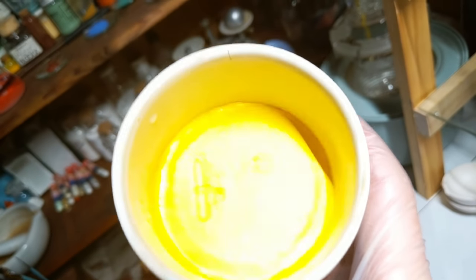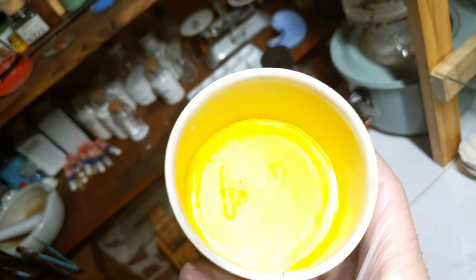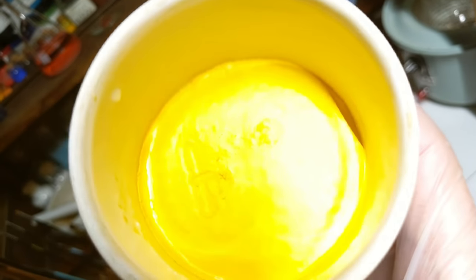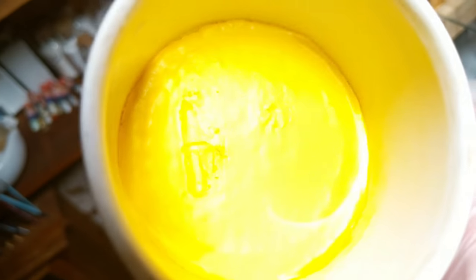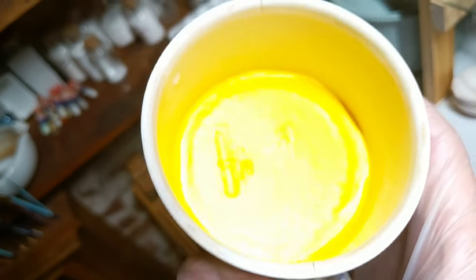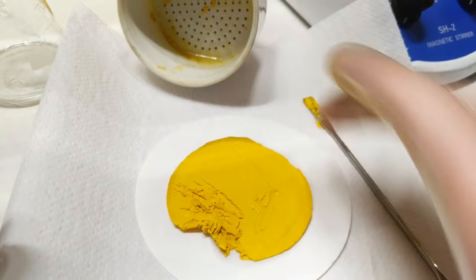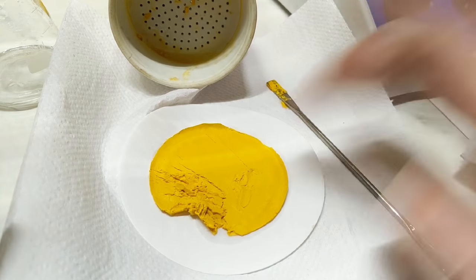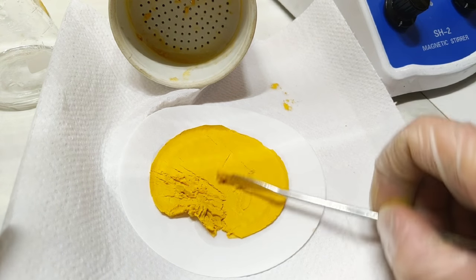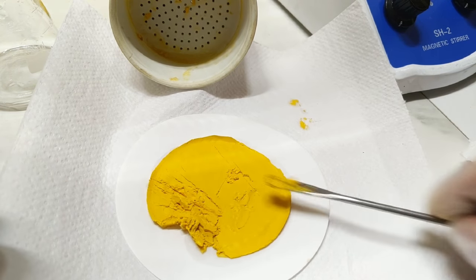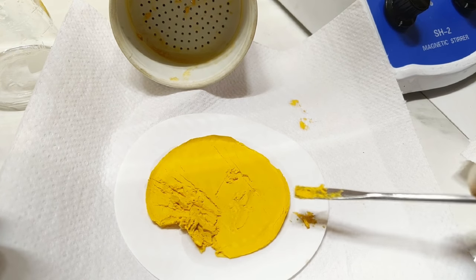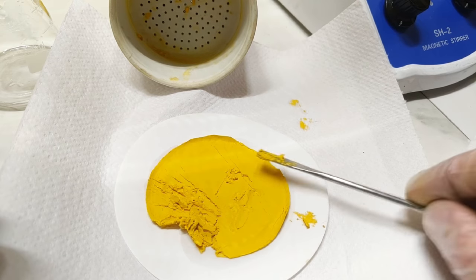Here we can see after running it through the vacuum filter, it seems to have dried up a fair bit. It's kind of hard to see, but you can see that the pigment is far from dry, but it's definitely dried out a lot. So that's the little cake of pigment after it's come out, which I'm just going to leave here on this piece of filter paper until it's dry, and then process it up from there.